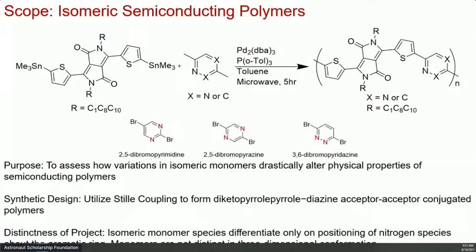We use a diketopyrrolopyrrole center with some thiophenes on the side. With that, you use a palladium catalyst, toss it in the microwave reactor, and afterwards you get a long-chain polymer to investigate. In coordination with people from USM and the University of Kentucky, we used a couple of different analytical methods to better understand the properties of these materials.